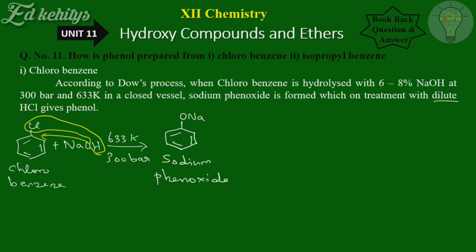Further, treating with dilute HCl, hydrolysis takes place. The Cl leaves and phenol (O-H) is obtained at that position. This is how phenol is prepared from chlorobenzene.